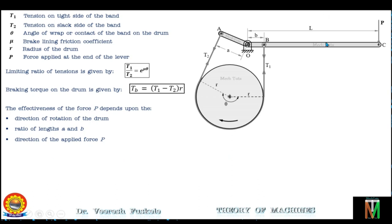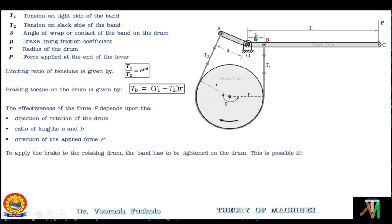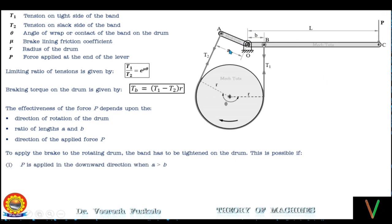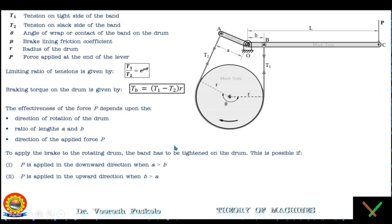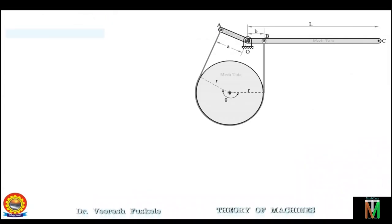To apply the brake on the rotating drum, the band must be tightened. This is possible if force P is applied in the downward direction when a is greater than b, and force P is applied in the upward direction when a is less than b. Let's start with the first case: when a is greater than b and P is applied in the downward direction.